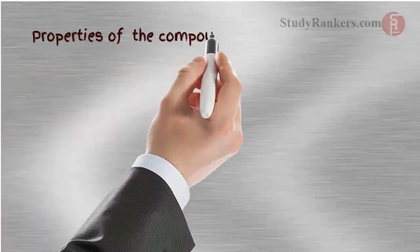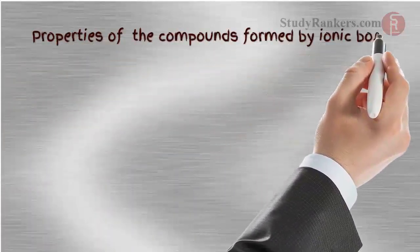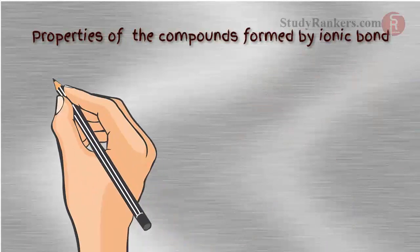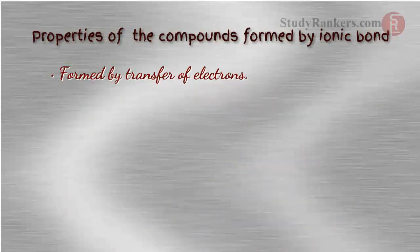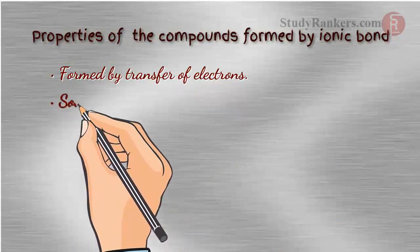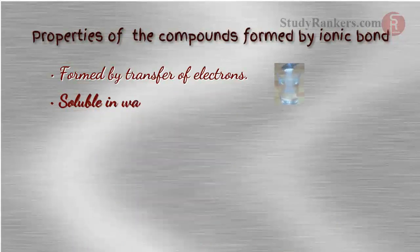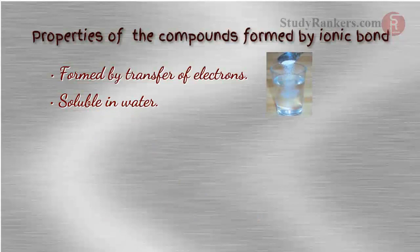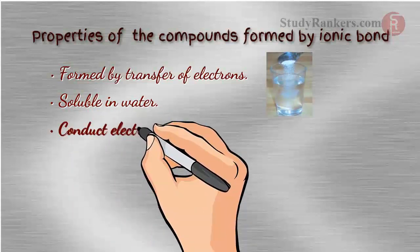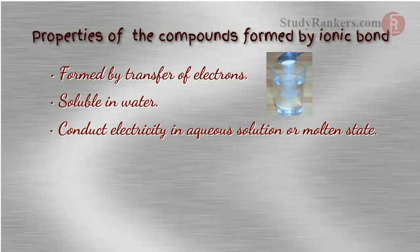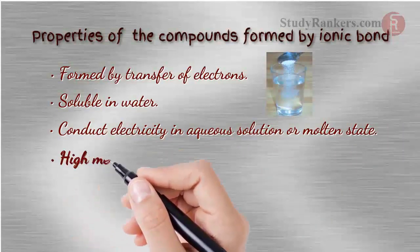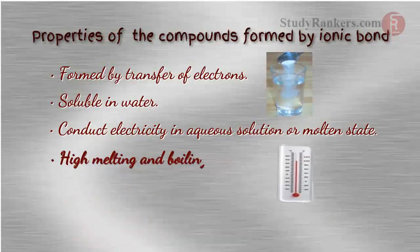The compounds formed by ionic bond exhibit the following properties: They are formed by transfer of electrons. They are soluble in water. They conduct electricity in aqueous solution or molten state. They have high melting and boiling point, hence are solid at room temperature.